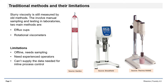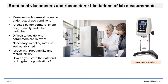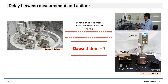Traditional methods of viscosity measurement are limited in their ability to supply the data needed for inline viscosity control. Viscosity cups are filled with slurry, and the time necessary for it to drain from the cup is recorded. This time gives slurry viscosity in cup seconds. The many uncertainties in procedures, as well as wear and deposits on cups, contribute to less than optimal accuracy and repeatability of cup measurements. Rotational viscometers and rheometers measure the torque necessary to turn a disc or cylinder at a constant RPM in a sample of the slurry. The ratio of torque to spindle speed is proportional to viscosity, usually measured in centipoise. Lab measurement reports often arrive hours after the samples are taken. You can only correct how the slurry was, not how it is now.